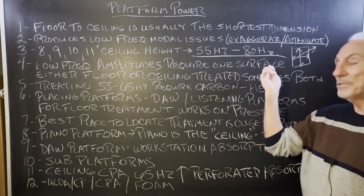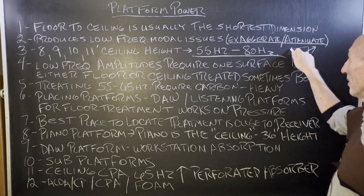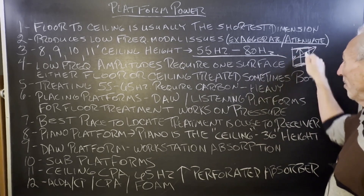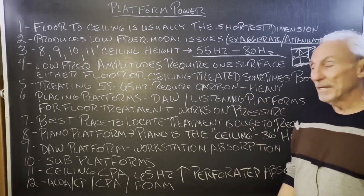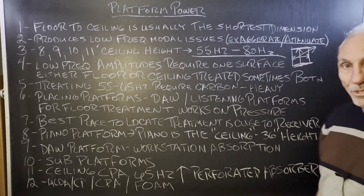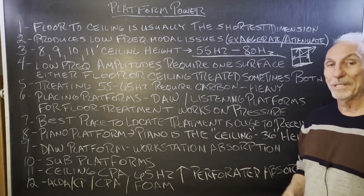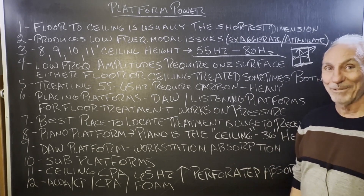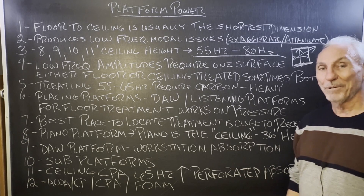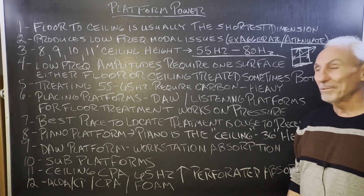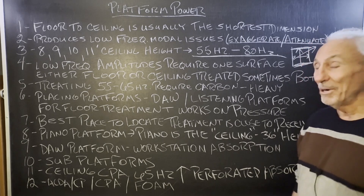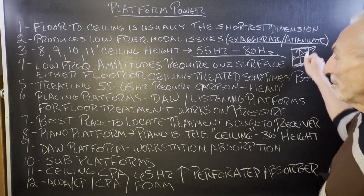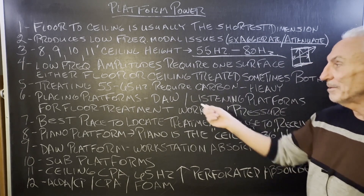Low frequency amplitudes require that you treat at least the ceiling or the floor, or sometimes both, depending on how much energy you're going to squeeze between those surfaces. EDM guys are way different — we have to do everything with those guys because they operate at very high pressure levels, very low frequency, and very small rooms. So it's a recipe for disaster across the board. We've got to treat at least one of the surface areas, either the floor or ceiling, sometimes both.